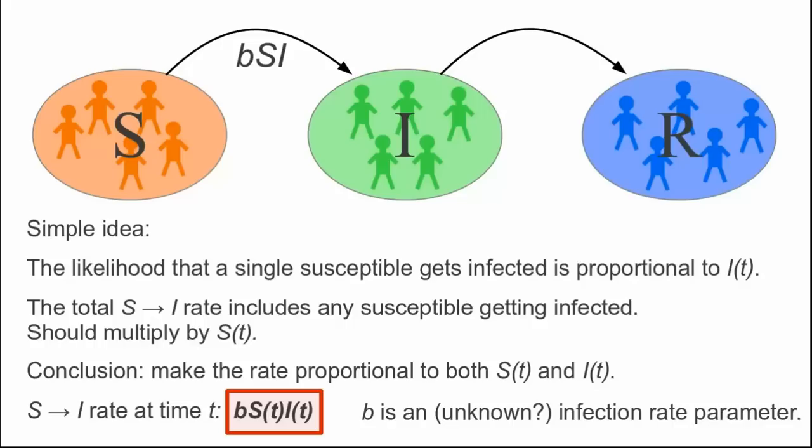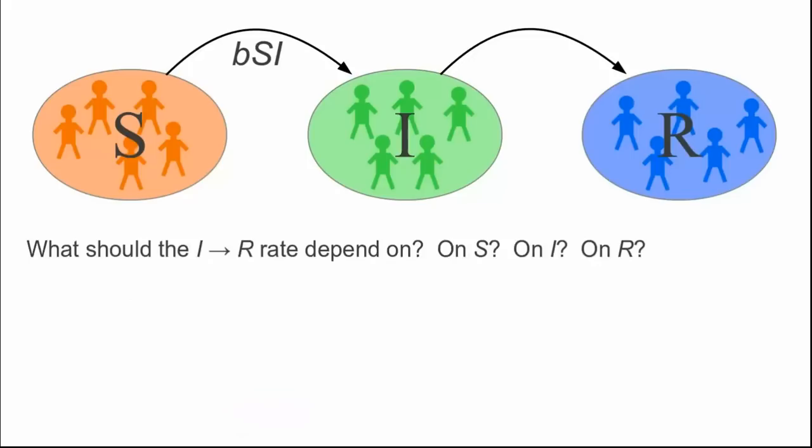Now we move on to the next arrow, which corresponds to the rate at which infectives become removed individuals that cannot infect any more people. Let's say these folks recover from the illness. What should this recovery rate depend on? The number of susceptibles, infectives, removed individuals?